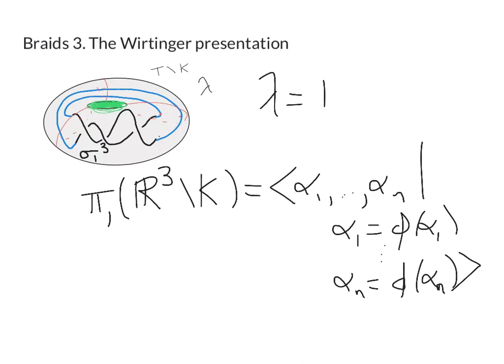This is called the Wirtinger presentation for the fundamental group of the complement of the knot. The presentation itself depends on the particular braid we've chosen to represent our knot. Maybe you could use different braids for the same knot. So let's go back to our example on the previous slide and see what the fundamental group of the knot complement is.